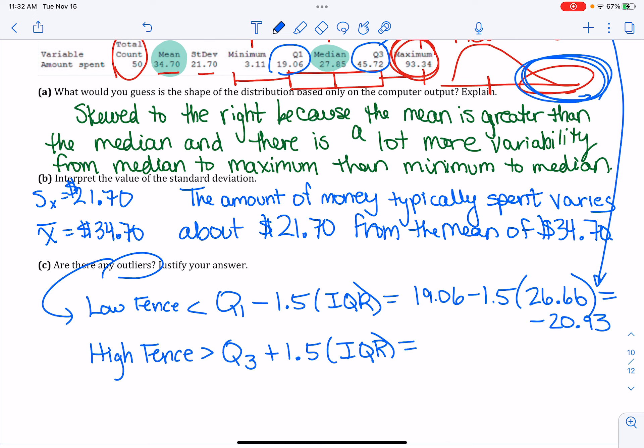Quartile 3, though, is 45.72 minus 1.5 times that interquartile range. And that's going to give me a value that is 85.71.